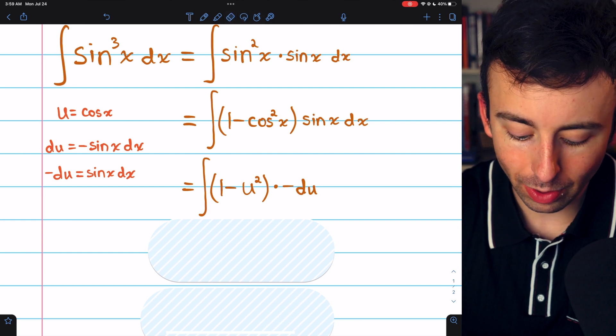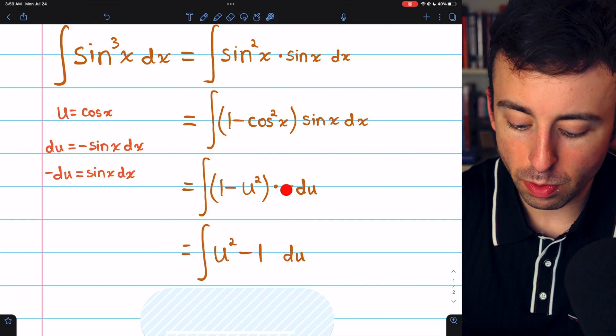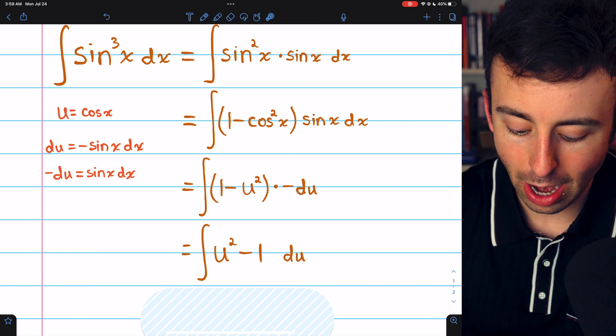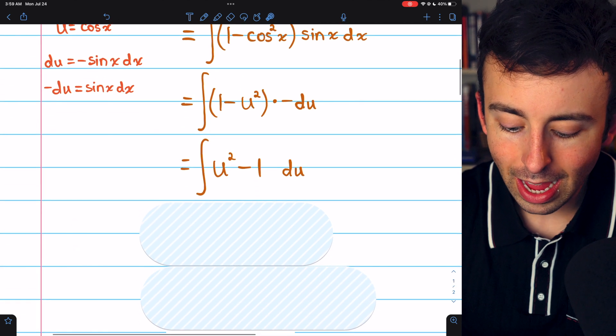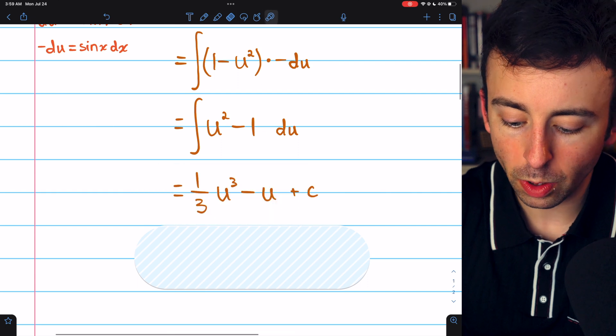Now, proceeding with this integral, let's distribute the negative through the parentheses. So now we have u squared minus one. And then it's just an application of the power rule.